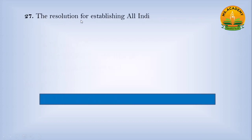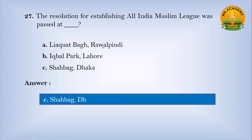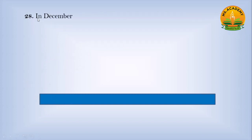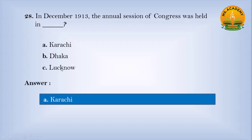The resolution for establishing the All India Muslim League was passed at: Option A, Liaquat Bagh, Rawalpindi; Option B, Iqbal Park, Lahore; Option C, Shah Bagh, Dhaka. Answer: C — Shah Bagh, Dhaka. In December 1913, the annual session of Congress was held in: Option A, Karachi; Option B, Dhaka; Option C, Lucknow. Answer: A — Karachi.